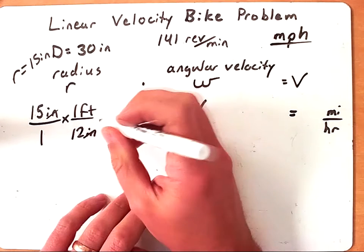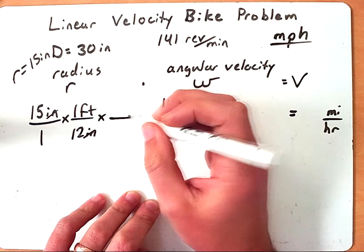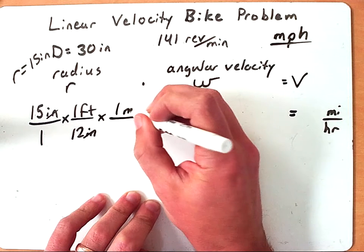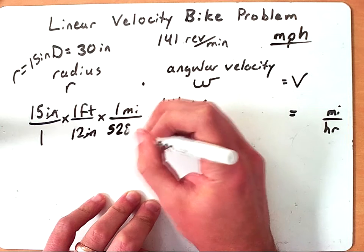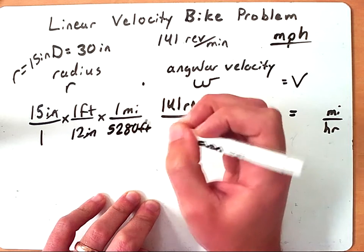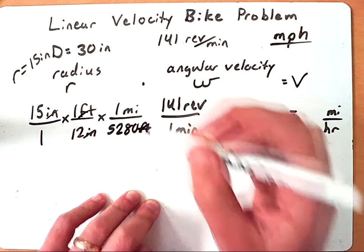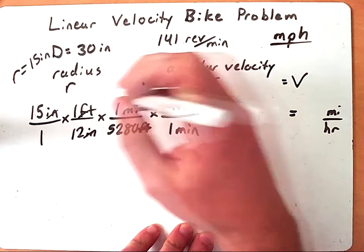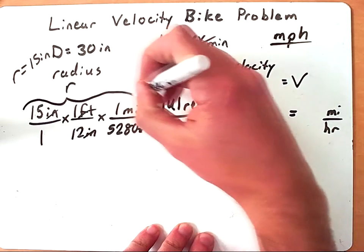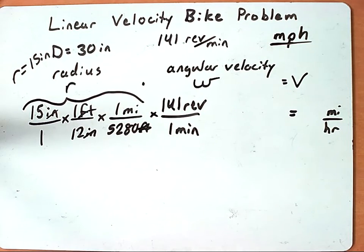Okay, so now I need to do the same thing and get feet to miles. So I want one mile on top. So on bottom, that means I have to do 5,280 feet. So that's going to cancel out feet there. So on top, I'm in miles. I need to be in miles at the end, so that's good there. All right, that takes care of the radius portion of our problem. We were just converting it to miles instead of inches. So now we need to take care of the angular velocity portion.